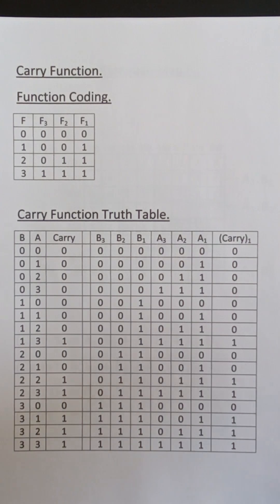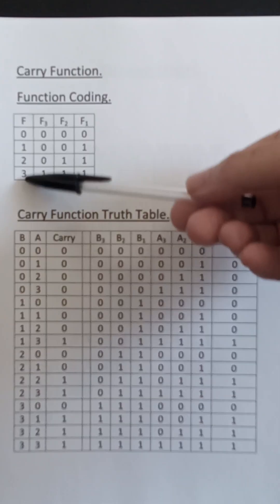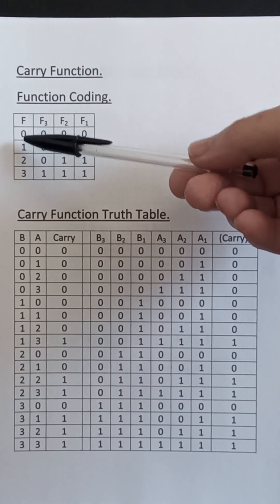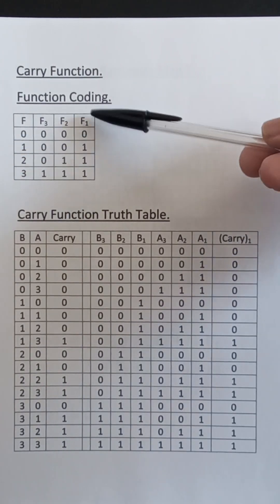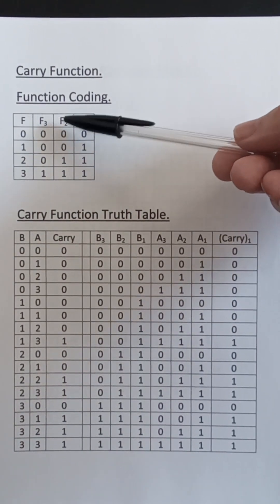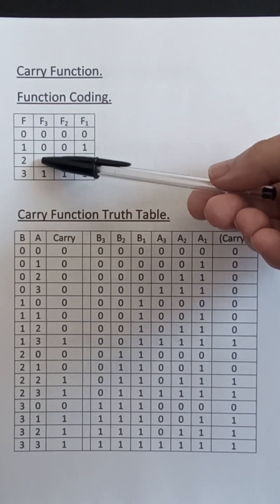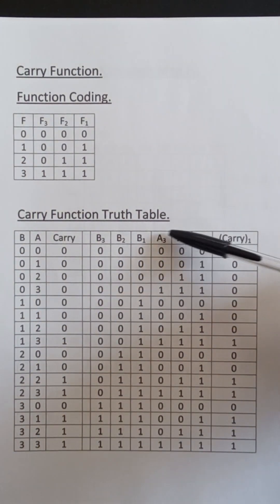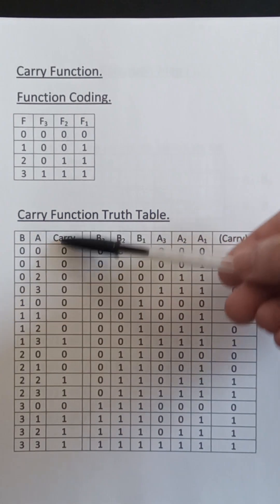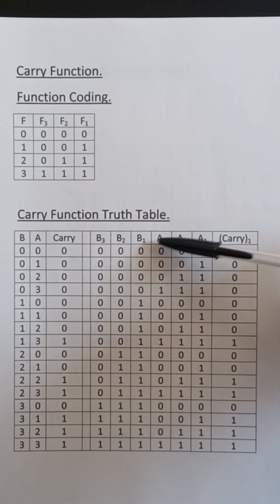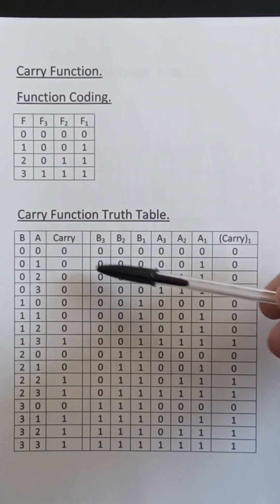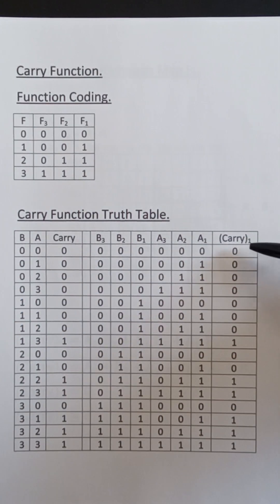Here we have the carry function. This is the coding I'm using for the truth table for the carry function: 0123, F1 0101, F2 0011, F3 0001. So here we have A, B and the carry. This is A1, A2 and A3 for A. B1, B2 and B3 for B. And I'm only using carry1 here.